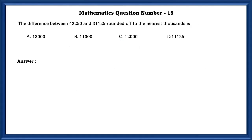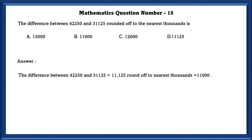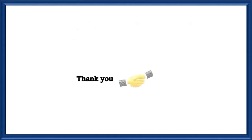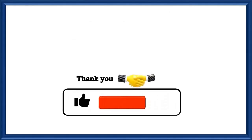Mathematics question number 15. The difference between these two numbers rounded off to the nearest thousand. The difference between these two numbers is equal to 11,125. Rounded off to the nearest thousand, we get 11,000. That's it for this video. Make sure to subscribe, hit the like button, and turn on post notifications so you never miss a video.